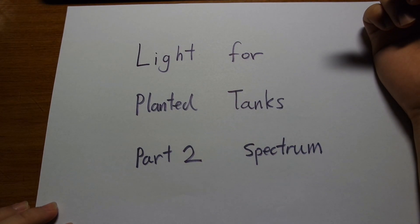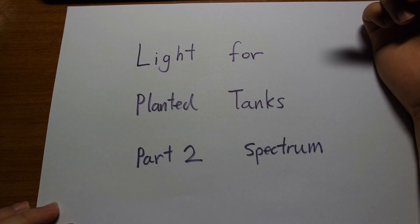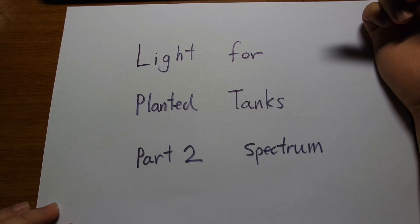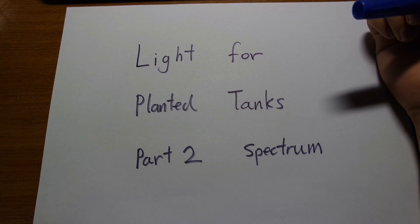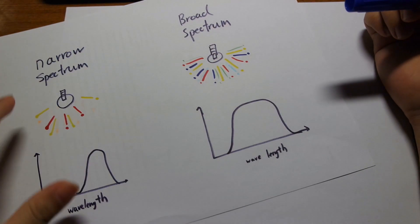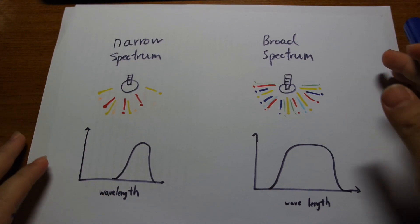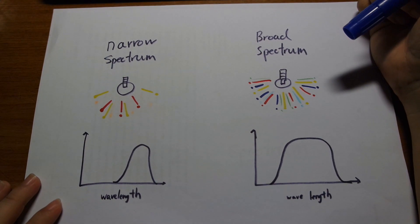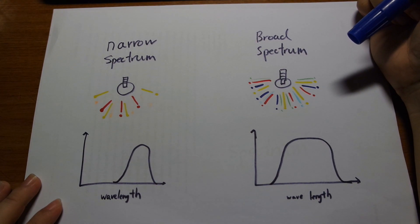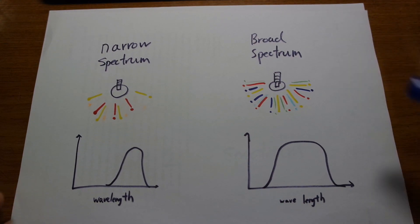Hello YouTube, this is part 2 of my series on light for planted tanks, and in this part I will be discussing the spectrum and what kind of spectrum you need to grow plants. A spectrum is basically the composition of wavelengths in a light bulb, so what kind of wavelengths your light is producing will determine its spectrum.